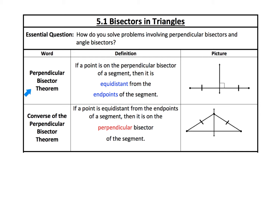Our first theorem is called the perpendicular bisector theorem, and it states that if a point is on the perpendicular bisector of a segment, then it is equidistant from the endpoints of the segment. If this line is a perpendicular bisector — perpendicular because it makes a 90-degree angle, and a bisector because it divides the segment into two equal parts — then any point along it is equidistant from the endpoints.